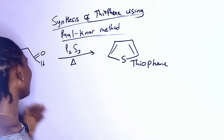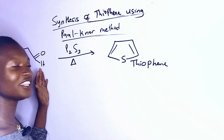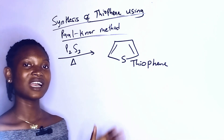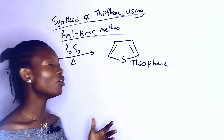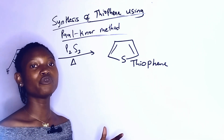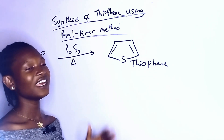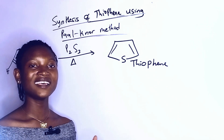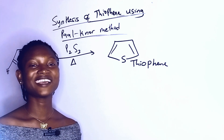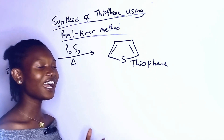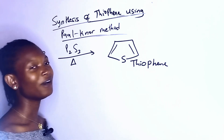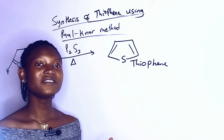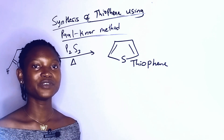The reaction scheme is just telling us that when you react a 1,4-dicarbonyl compound in the presence of P2S5, it is going to give us thiophene. But let's go through the reaction mechanism and see how the 1,4-dicarbonyl compound gives thiophene.